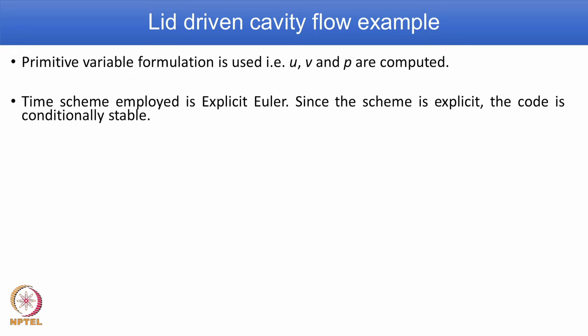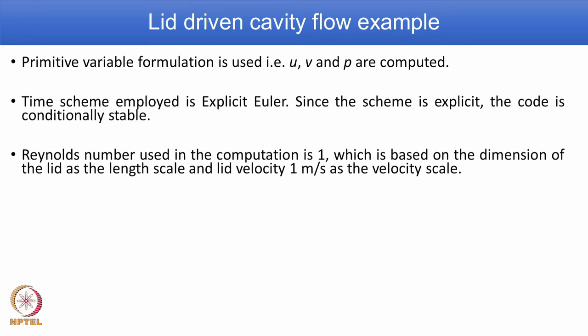For simplicity we consider explicit Euler time integration. Because it is explicit, the scheme is conditionally stable. Reynolds number needs to be defined with a length scale and a velocity scale. In this problem the length scale is the side of the cavity, and because we have a square cavity all sides are equal. The top lid driven velocity is the velocity scale. Reynolds number computed based on this length scale and velocity scale is 1 — this is only for demonstration purposes. You can increase the Reynolds number to investigate the flow further.